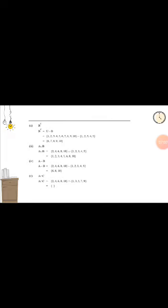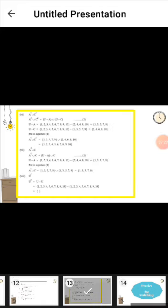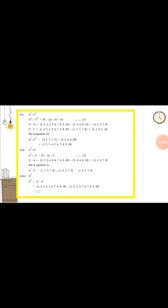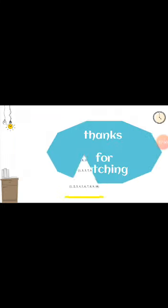Part five: A intersection C. Intersection means what is common between both subsets. There is nothing common between subset A and subset C, so this is the empty set. Part eight: U complement. U complement is universal set minus universal set, and its result is also the empty set. The remaining parts are your assignment for practice. Our lecture is complete. We will meet in the next lecture. Thanks students for watching.